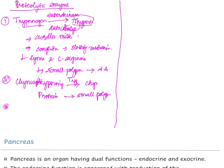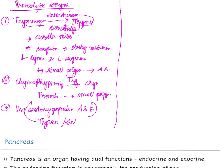Next are procarboxypeptidase A and B, which are converted into carboxypeptidase A and B by trypsin and enterokinase. Carboxypeptidase splits protein chains by removing amino acid residues from the free carboxyl end.